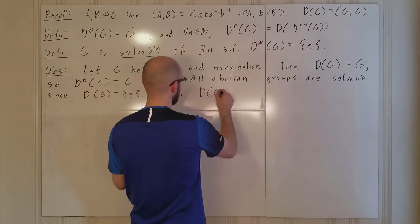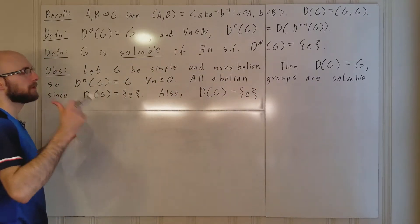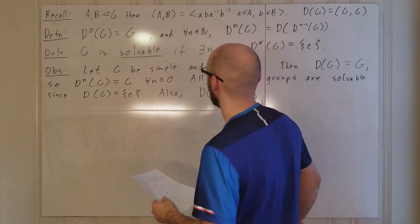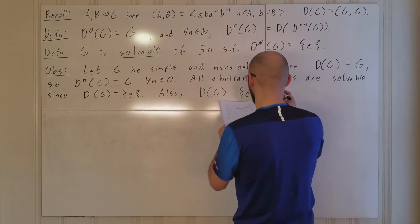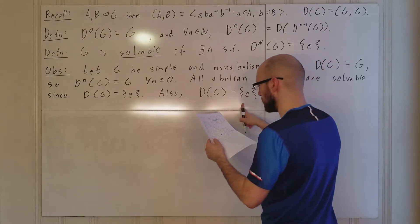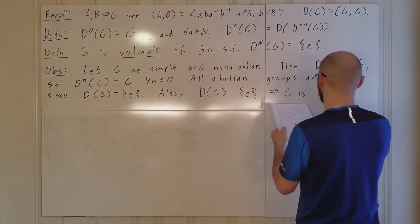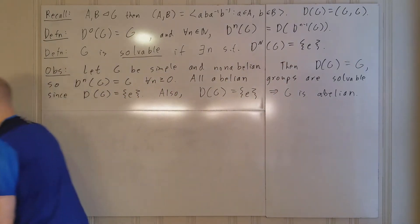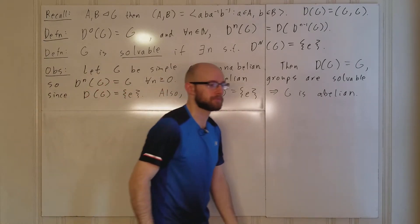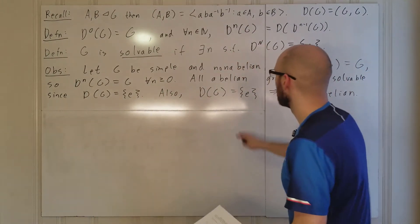So the commutator subgroup of any abelian group is trivial, which tells us abelian groups are solvable — you just take the commutator subgroup once and you're done. This implies DG = e if and only if G is abelian — a complete if-and-only-if relationship between abelian groups and groups whose commutator subgroup is trivial.